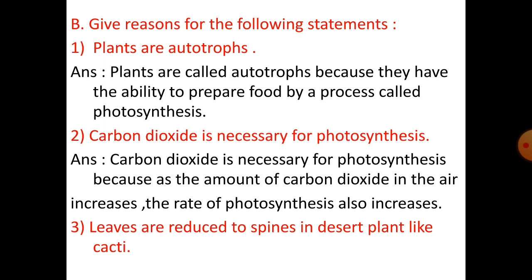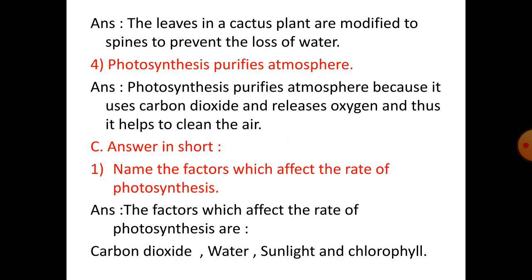Number three: Leaves are reduced to spines in desert plants like cacti because the leaves are modified to spines to prevent the loss of water. Number four: Photosynthesis purifies the atmosphere because it uses carbon dioxide and releases oxygen, thus helping to clean the air.